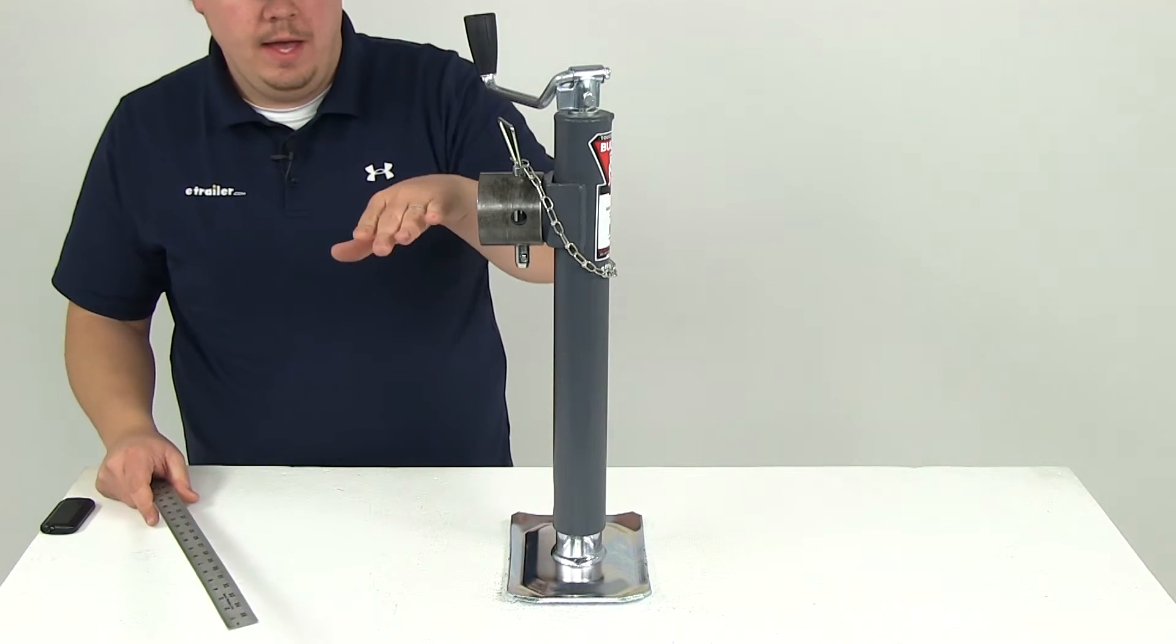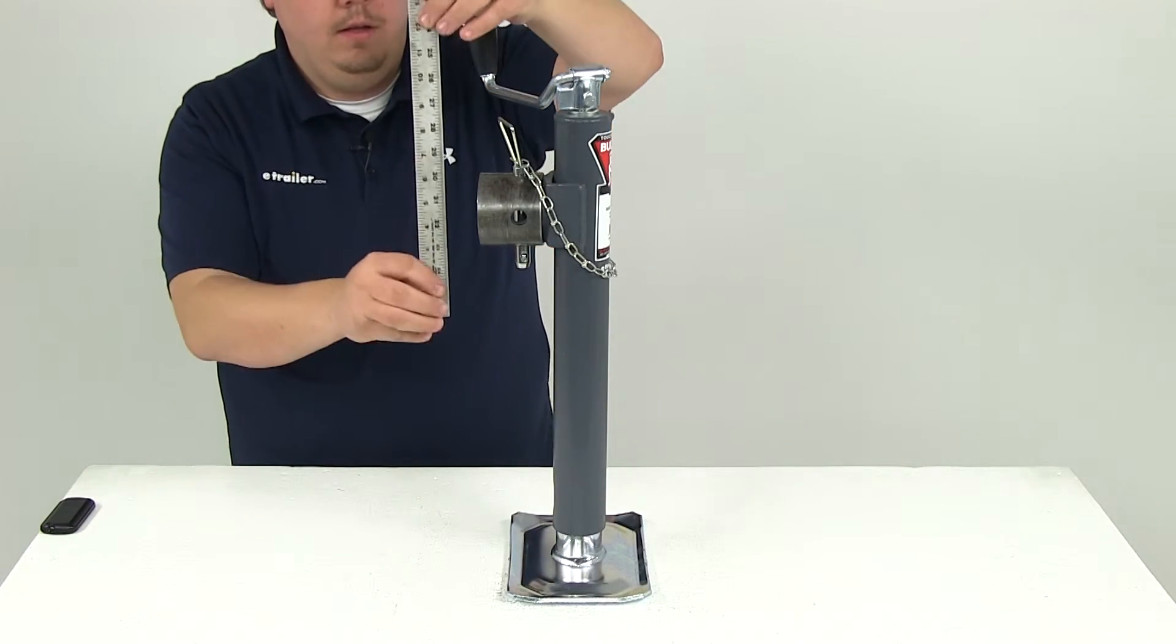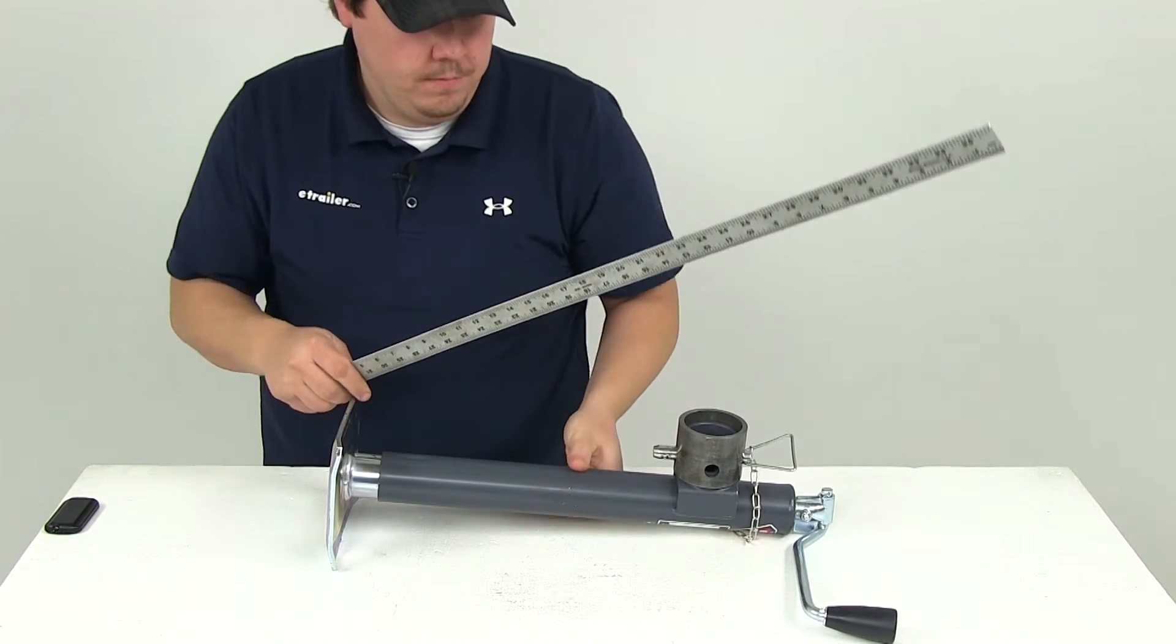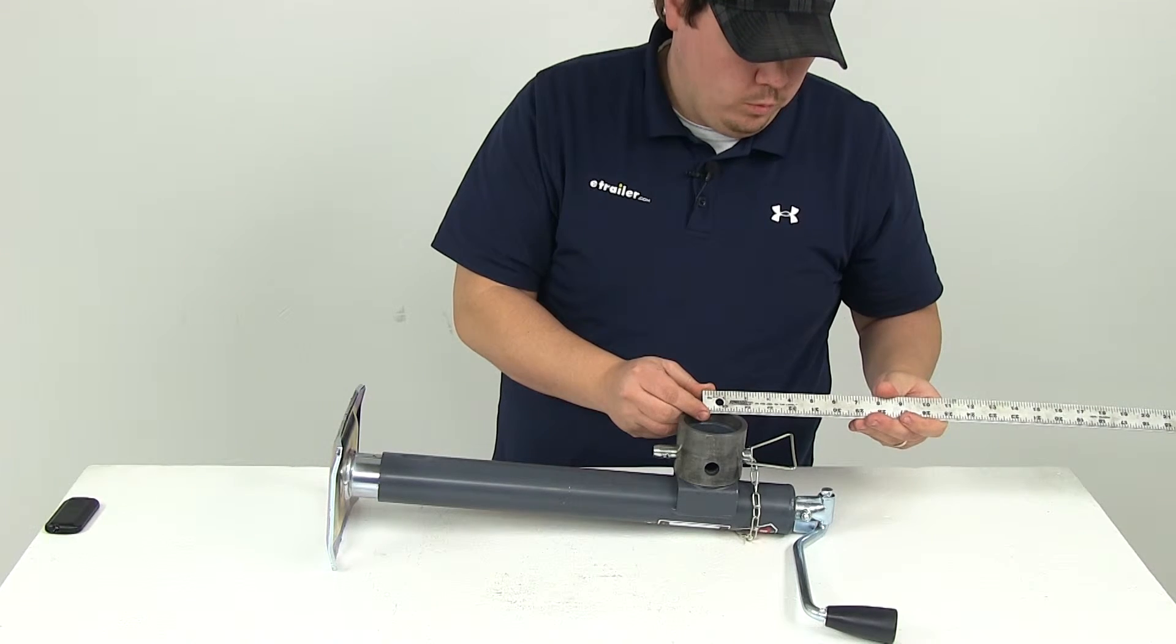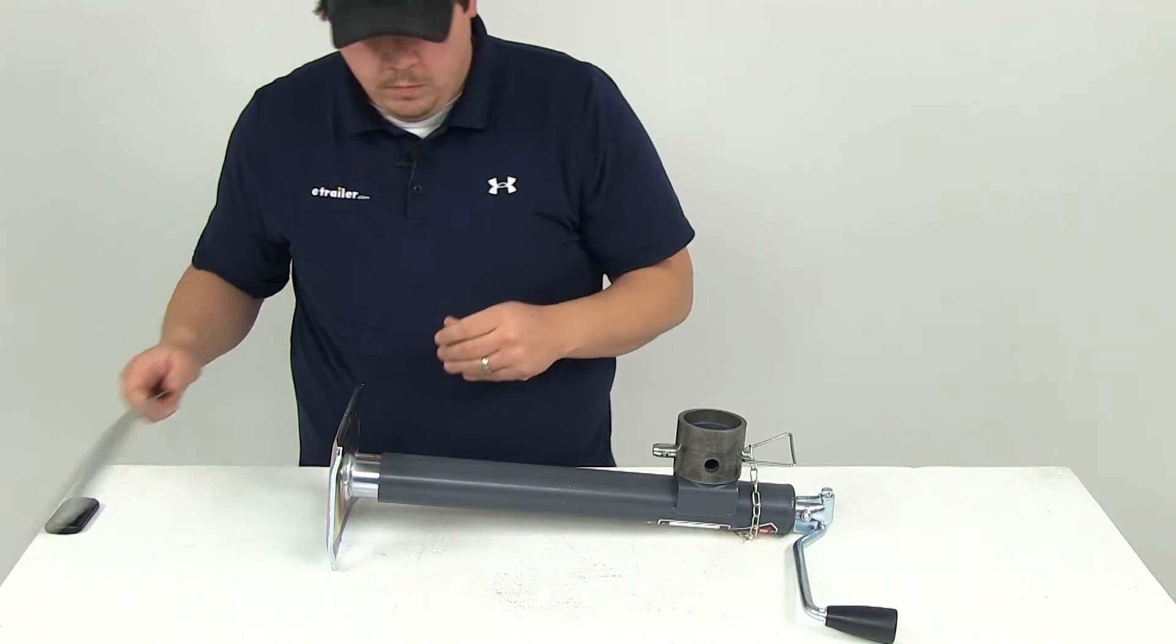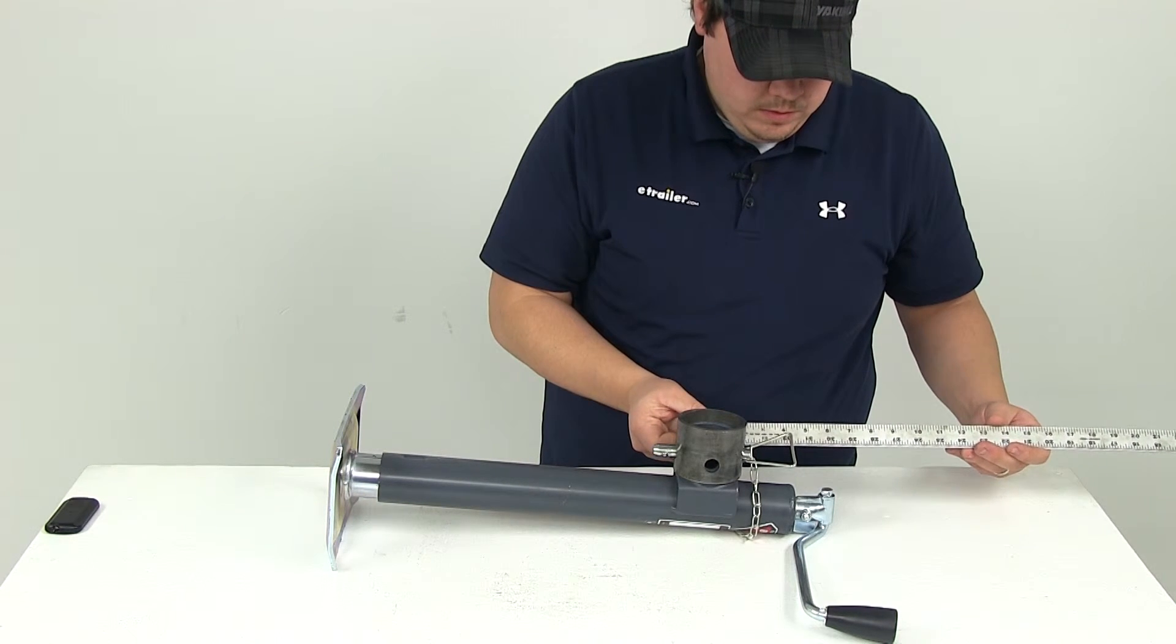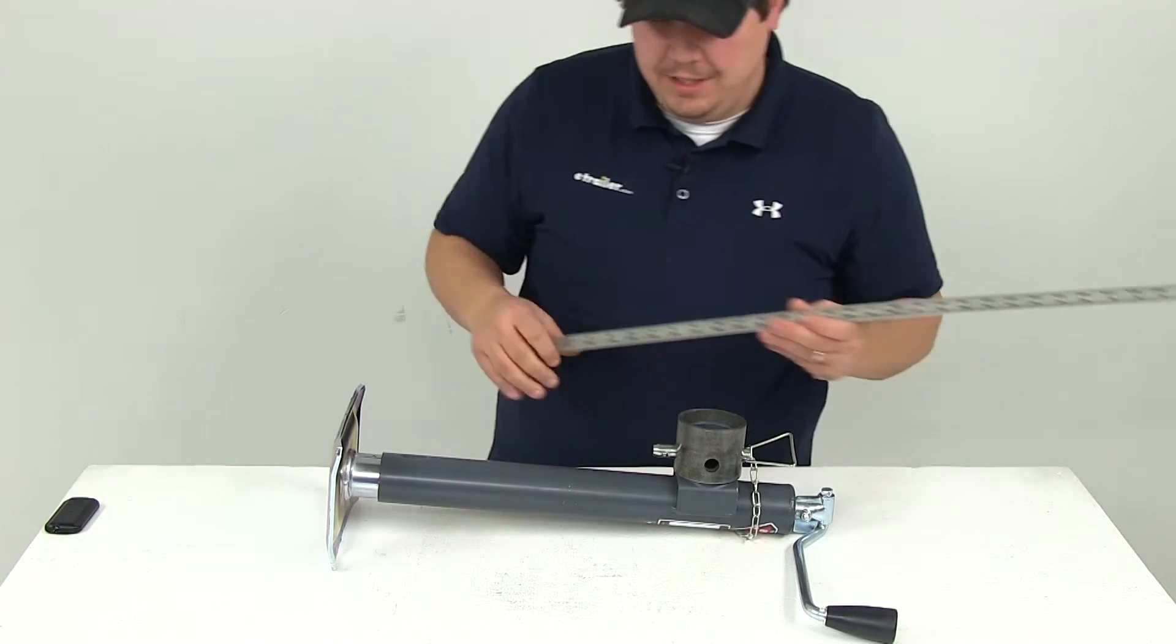The amount of clearance from the mounting bracket to the top of the jack is about 4 and 1/4 inches not including the handle. If we take that measurement including the handle it's going to be closer to six inches.